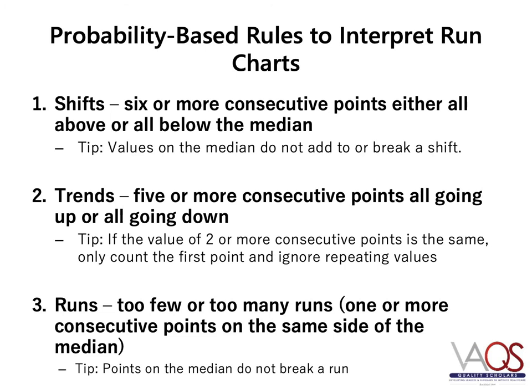Trends are five or more consecutive points all going up or all going down. If the value of two or more consecutive points is the same, only count the first point and ignore repeating values.